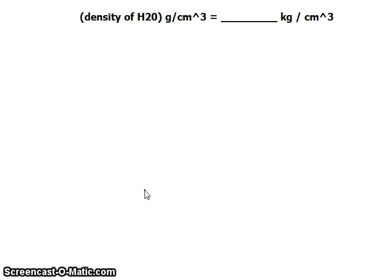Hi there again, this is Ken and we have here another unit conversion problem. The density of water, which is 1 gram per cubic centimeter, is converted to units in kilogram per cubic kilometer.